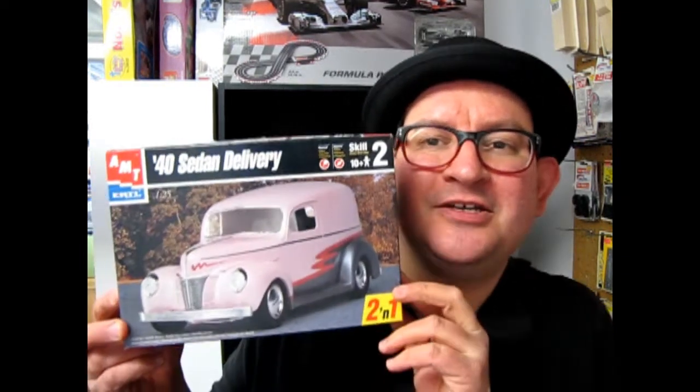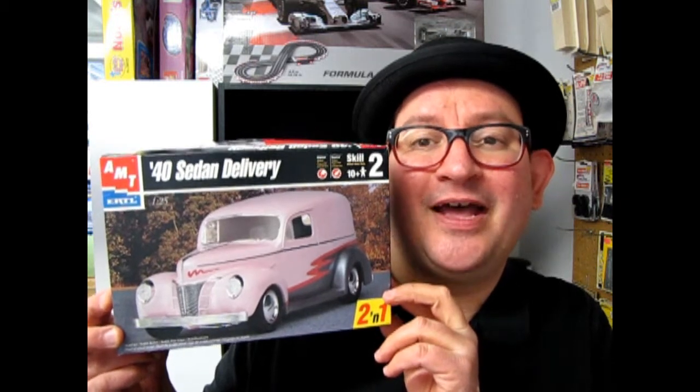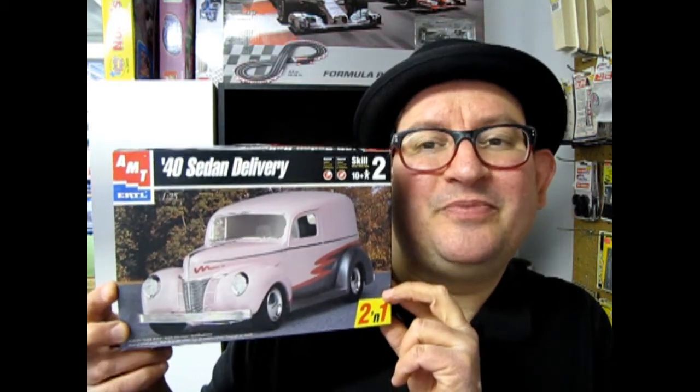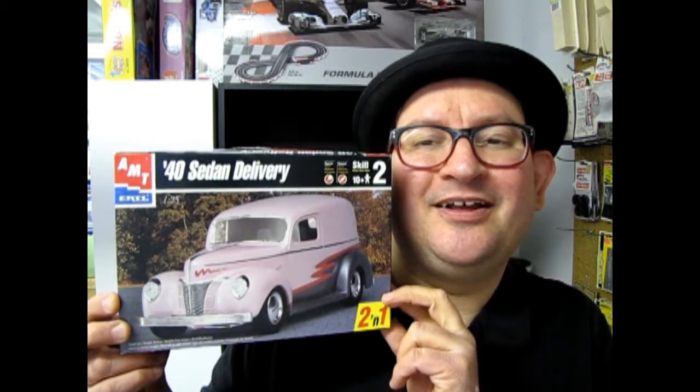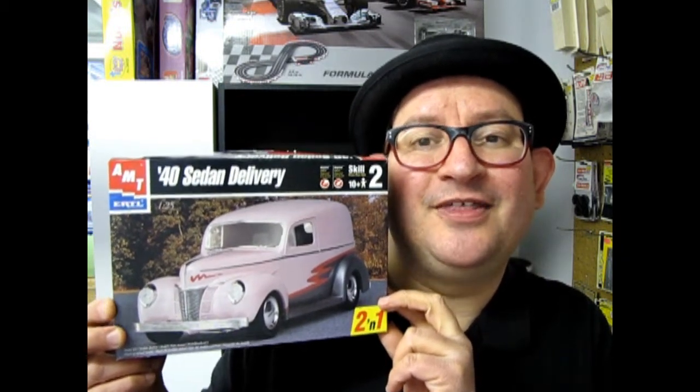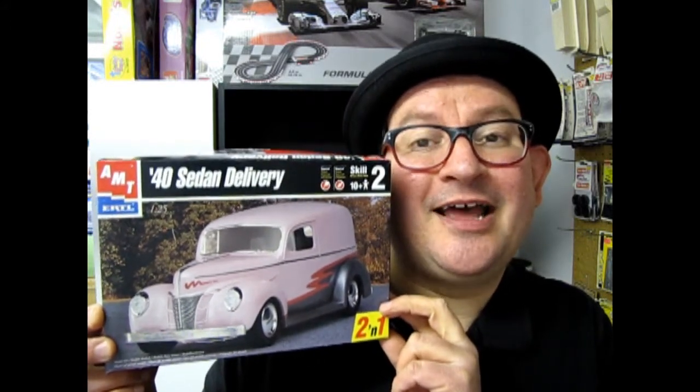Welcome back to another episode of the 1940s version of Monster Hobby's What's in the Box. We're going to be looking at the 1940 sedan delivery Ford kit from AMT. So don't let the pink and silver scare you off because we're going to take a look at what's underneath the lid right now. So let's go down to our bench and have a look.